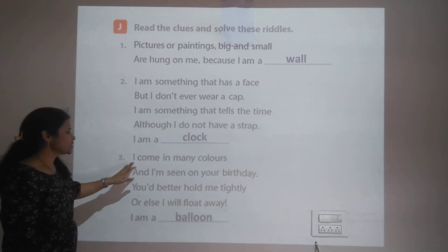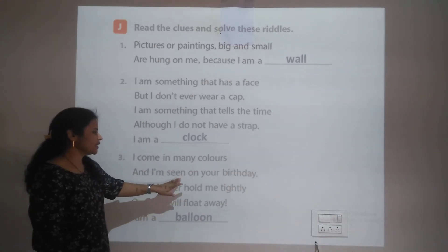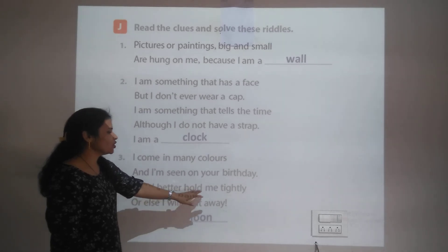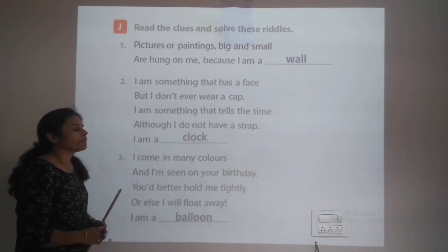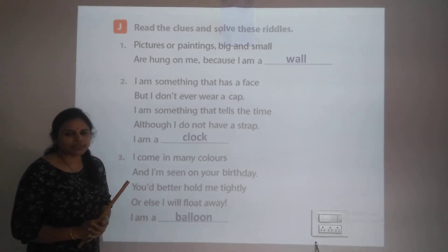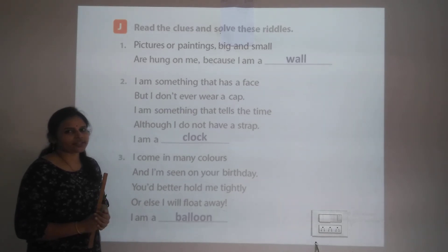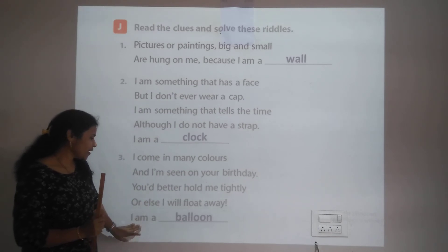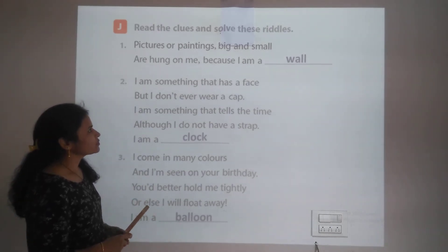Third riddle: I come in many colors and I am seen on your birthday. You had better hold me tightly, or else I will float away. I come in many colors, you see me on your birthday, and if you don't hold me tightly I fly away. The answer is a balloon.